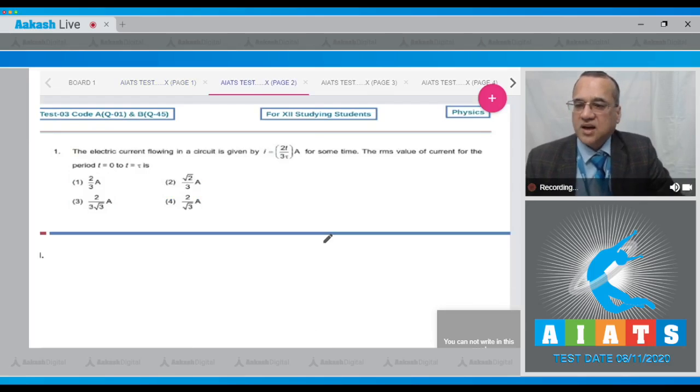The first question says that the electrical current flowing in a circuit is given by equation I equals 2t divided by 3 tau ampere for some time. The RMS value of the current for the period t equals 0 to t equals tau is, these are four options.